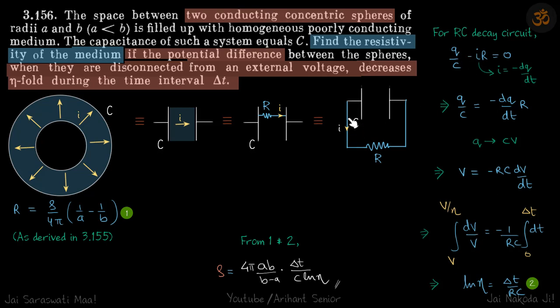So if we use KVL then Q by C minus I R is equal to zero. I in RC circuit is minus dQ by dt because the charge decreases with time but current is positive. So we write it like this and put Q equals CV, which gives the relation between V and time.